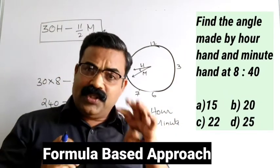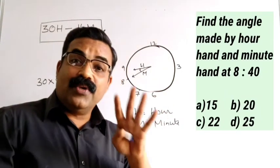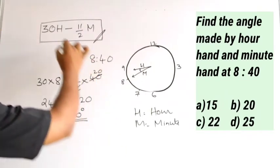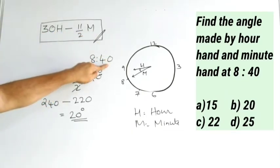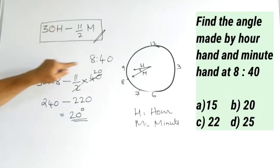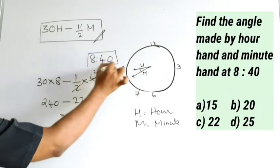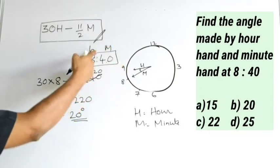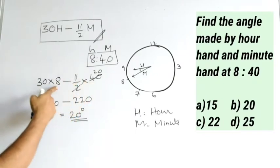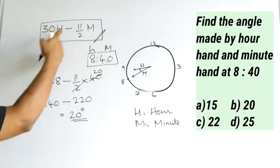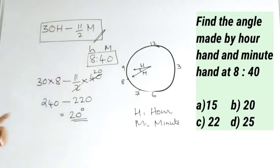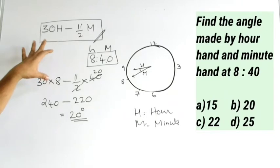This method of solving these questions is called the formula-based approach. In any competitive exam, if you have this type of question, simply apply the formula: 30H minus 11 by 2 times M. Here 8 is the hour and 40 is the minute, so 30 into 8 minus 11 by 2 into 40 gives 240 minus 220, which equals 20 degrees.